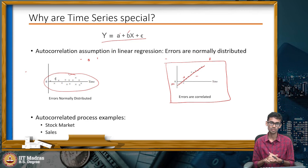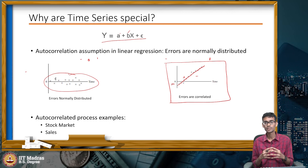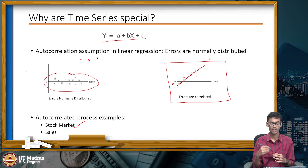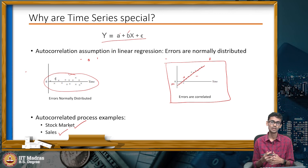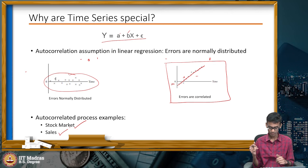If autocorrelation exists, it doesn't mean the process is flawed — it's just the nature of the process. However, the assumptions of linear regression won't allow us to model it that way. Stock markets and sales data typically exhibit this autocorrelation property, and the entire stock market modeling is primarily based on time series modeling. With that background, we will proceed further.